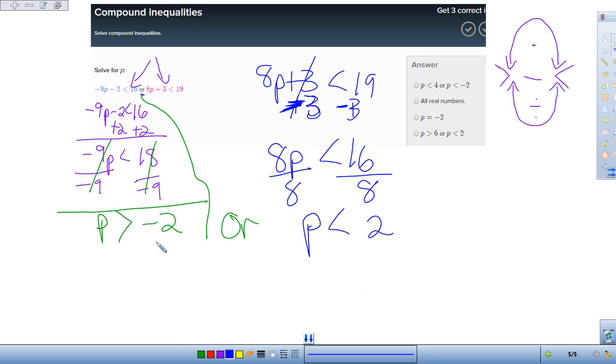P is greater than negative 2 or P is less than 2. And by the way, what would that look like? If I had a number line and here is 0 and here is 2 and here is negative 2.